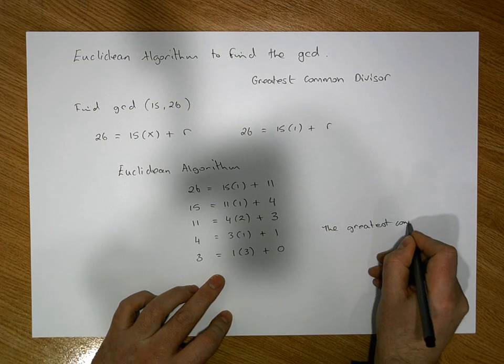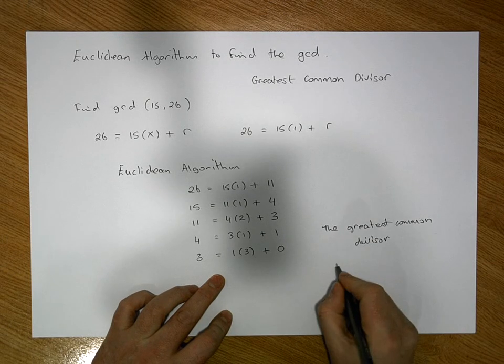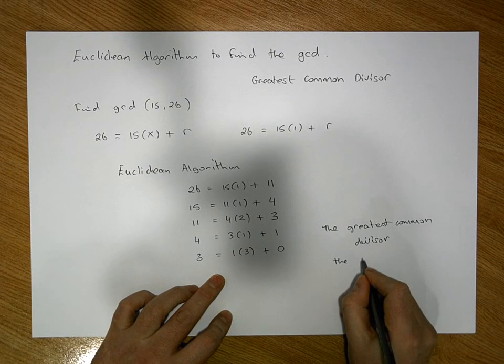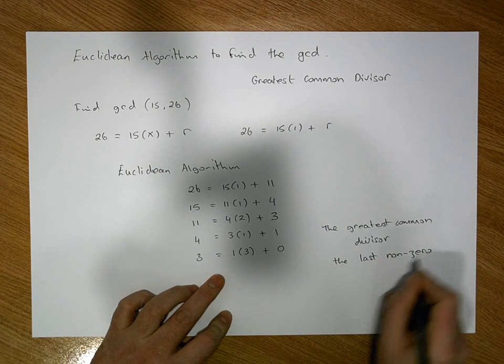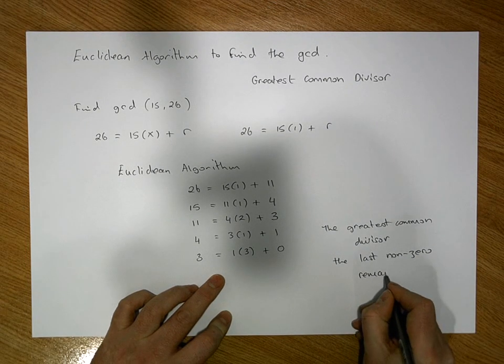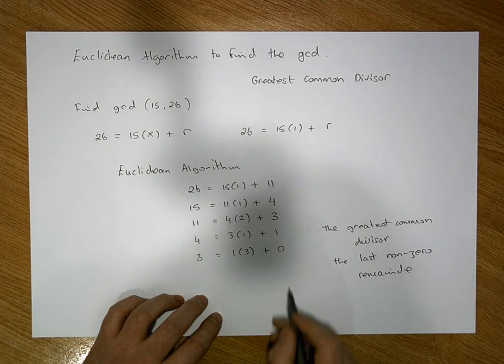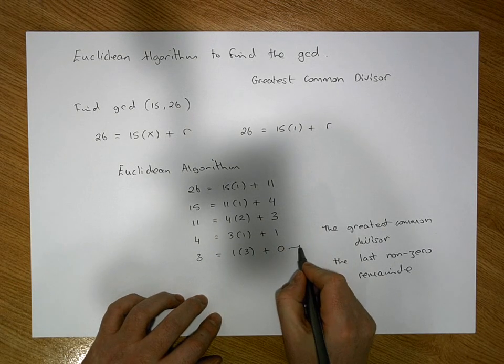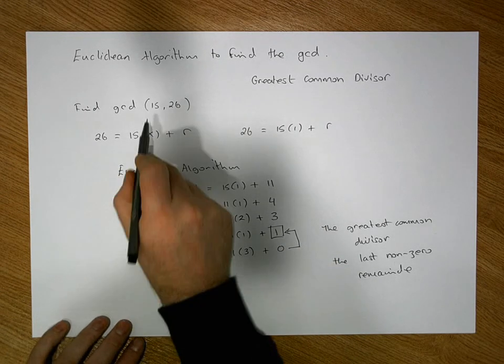But more importantly for us, the greatest common divisor is defined to be the last non-zero remainder in this application of the division algorithm. So the last non-zero remainder is this remainder here. So actually, the greatest common divisor of 15 and 26, the GCD of 15 and 26, is equal to 1.